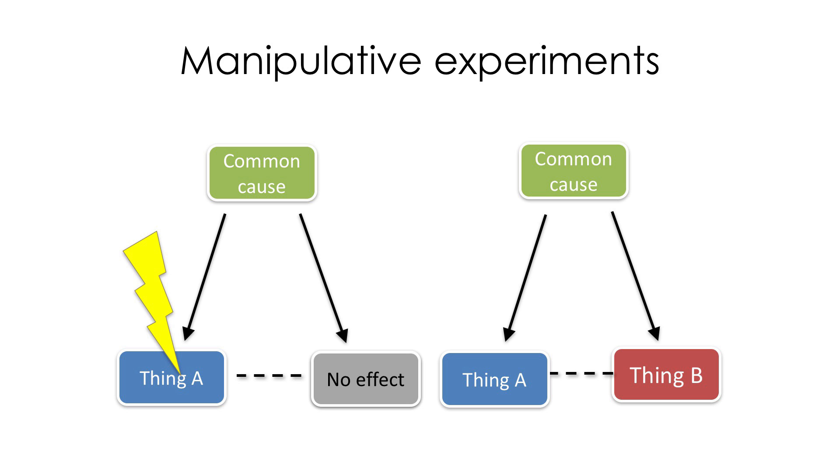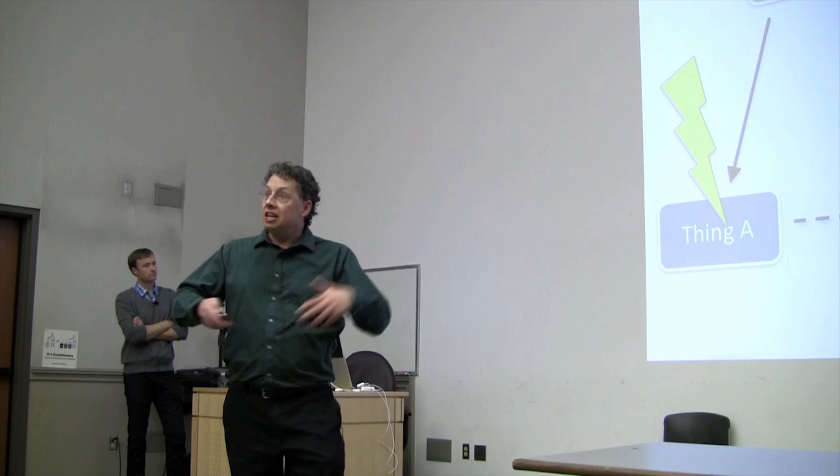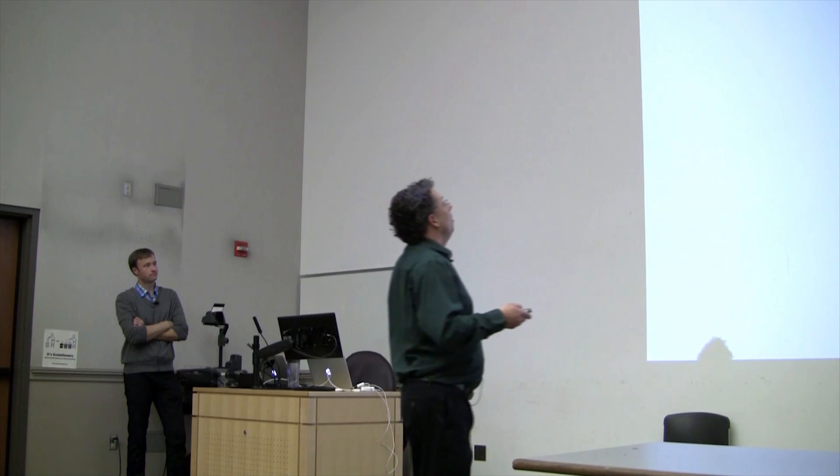Similarly, if there's common cause, then we go in and we change thing B. That should have no effect on thing A, right? So that's a way that we can actually get in there and use experimentation to try to get at causality.